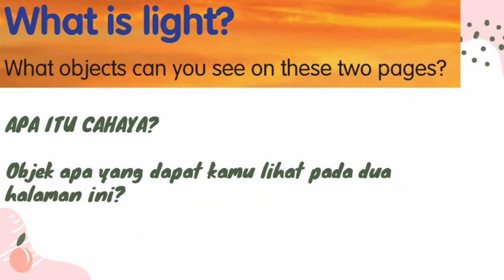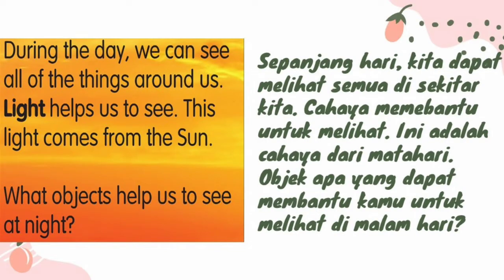What is light? Apa itu cahaya? What object can you see on this two page? Objek apa yang dapat kamu lihat pada dua halaman ini? During the day — sepanjang hari — we can see all of the things around us. Light helps us to see. Cahaya membantu kita untuk melihat. This light comes from the sun. Cahaya ini berasal dari matahari. What object helps us to see at night?